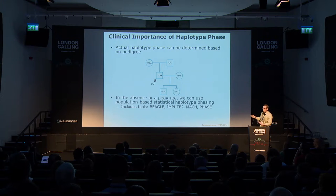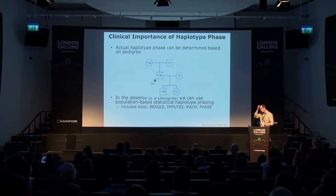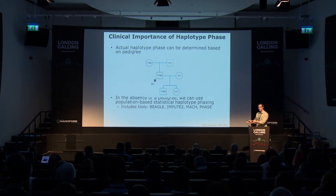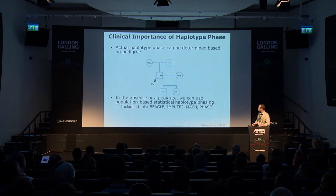Here's an example where 23andMe genotyping predicted something incorrect because the data wasn't phased. The individual was predicted to be Star 3/Star 3, which is extremely rare. They looked at the pedigree, which can be used to figure out the correct diplotype, and confirmed this individual is actually Star 1/Star 3A instead of Star 3B/Star 3C. In the absence of a pedigree, you would use population-based statistical haplotype phasing. A popular tool is Beagle, which is what we used.